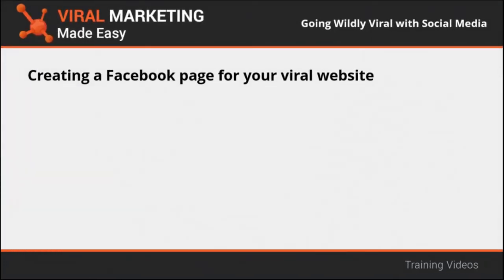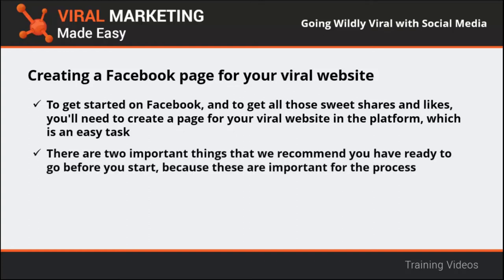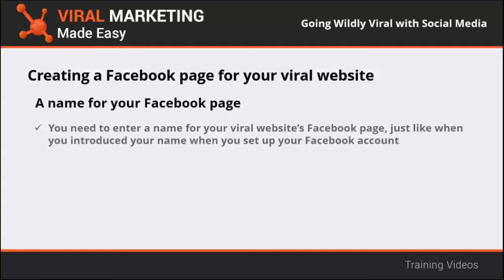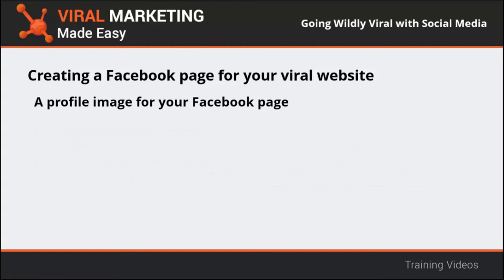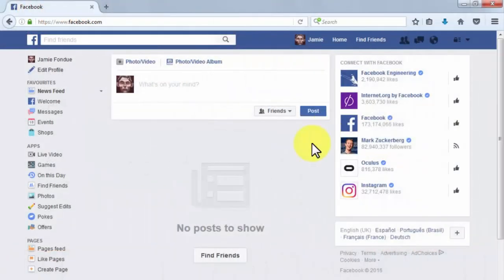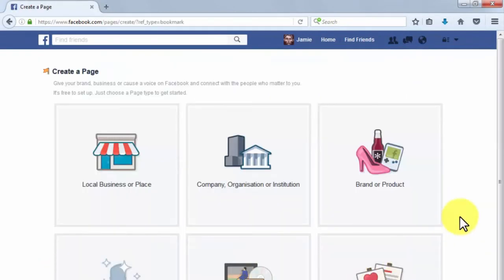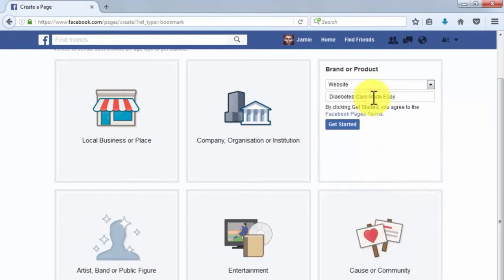To get started on Facebook and get all those shares and likes, you'll need to create a page for your viral website. Have two things ready: a name for your Facebook page — the easiest route is to use the actual name of your website — and a profile image, commonly the website name against a color background. On Facebook, go to the sidebar menu on the left and click Create Page. Select brand or product, choose Website from the drop-down menu, enter your viral website name, and click Get Started.